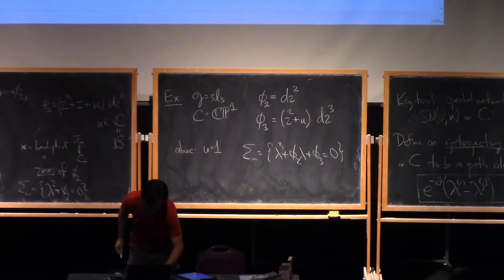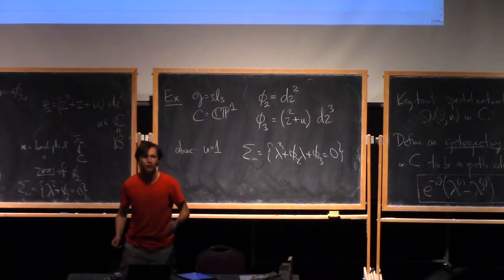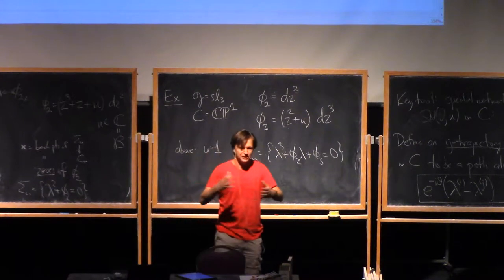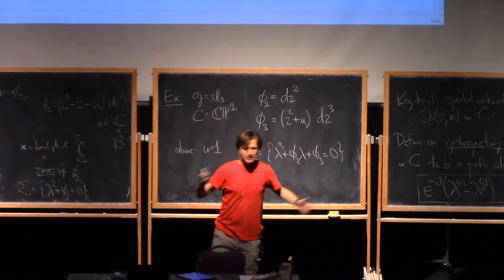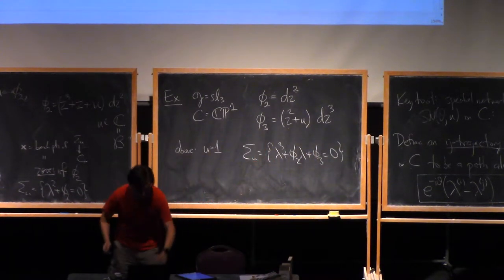First of all, the things can cross each other now. They couldn't before because before they all satisfied the same differential equation. They lived in a global foliation. But now, they satisfy different equations so they can cross each other.